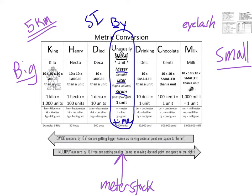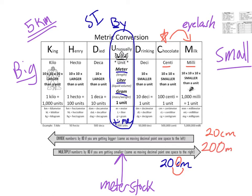So if I'm given a number in certain units and I need to convert it — for instance, if I'm given 20 centimeters and I want to know how many millimeters that is: centimeters are here, and I'm going to millimeters, which is just one step to the right. I draw one arch that goes from centi to milli. When I move to the right, I move my decimal one place to the right as well, and fill in a zero. So I've gone from 20 centimeters to 200 millimeters.